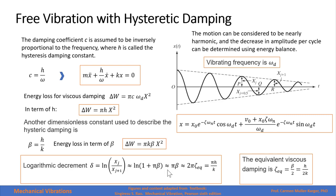That's equal to πH over K. Here we have the equivalent viscous damping, which is ζ equivalent, will be β/2, or H over 2K.